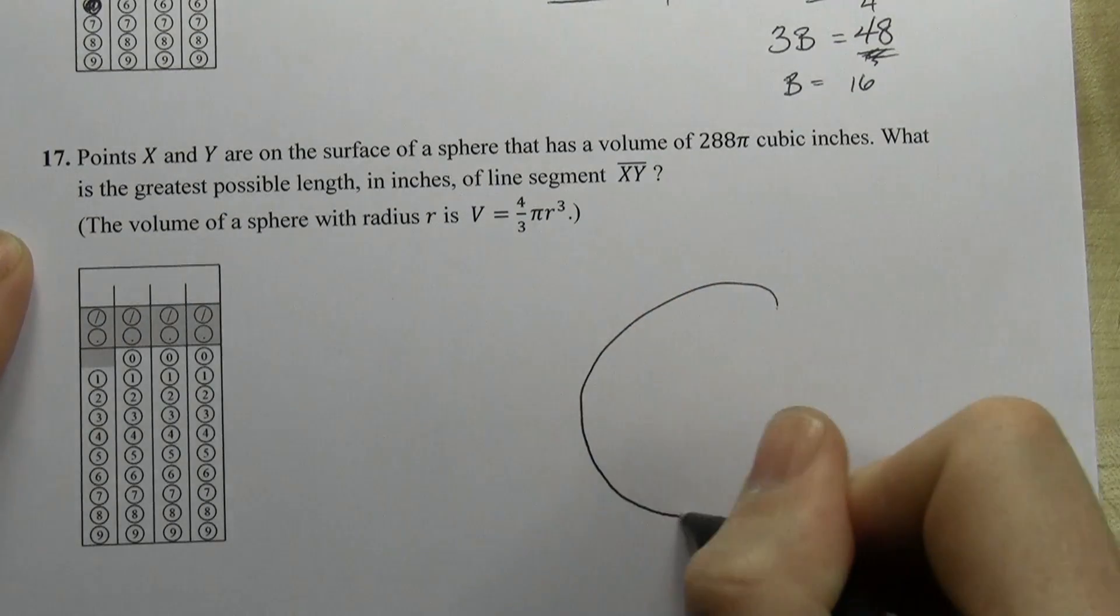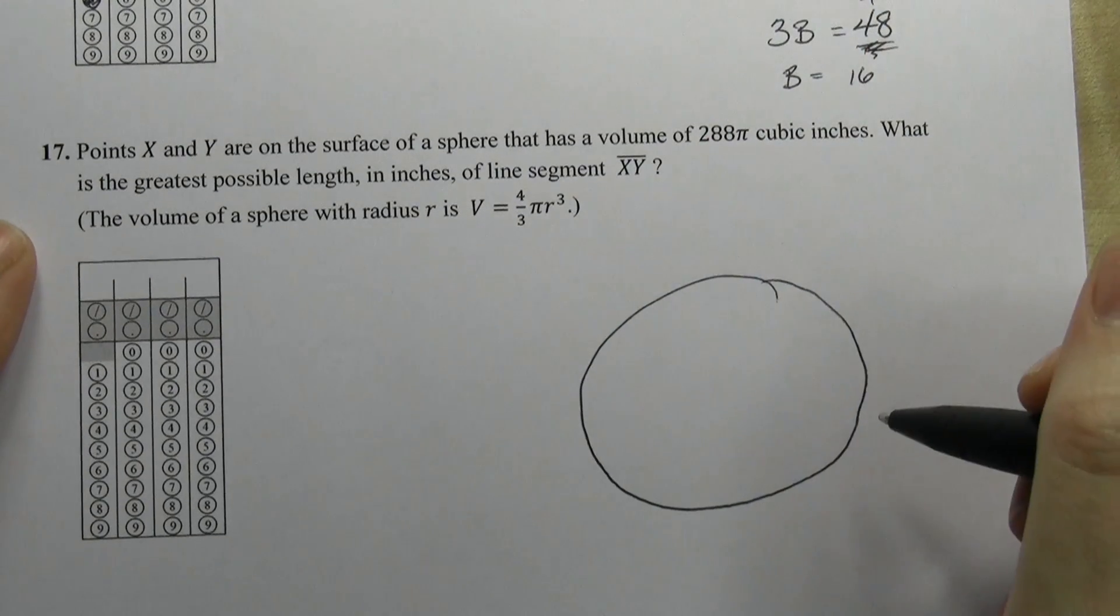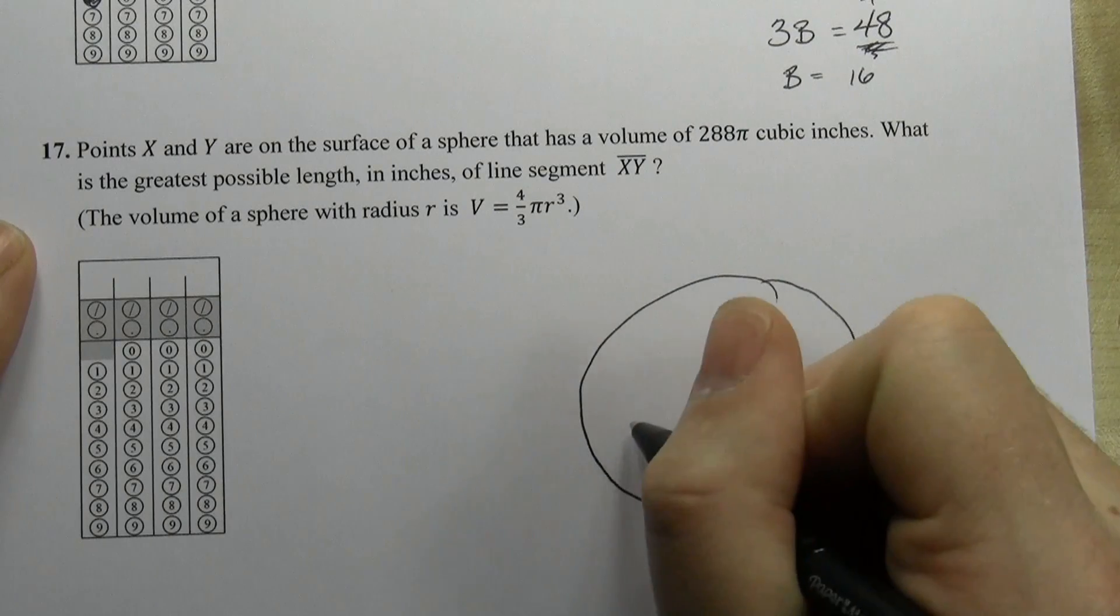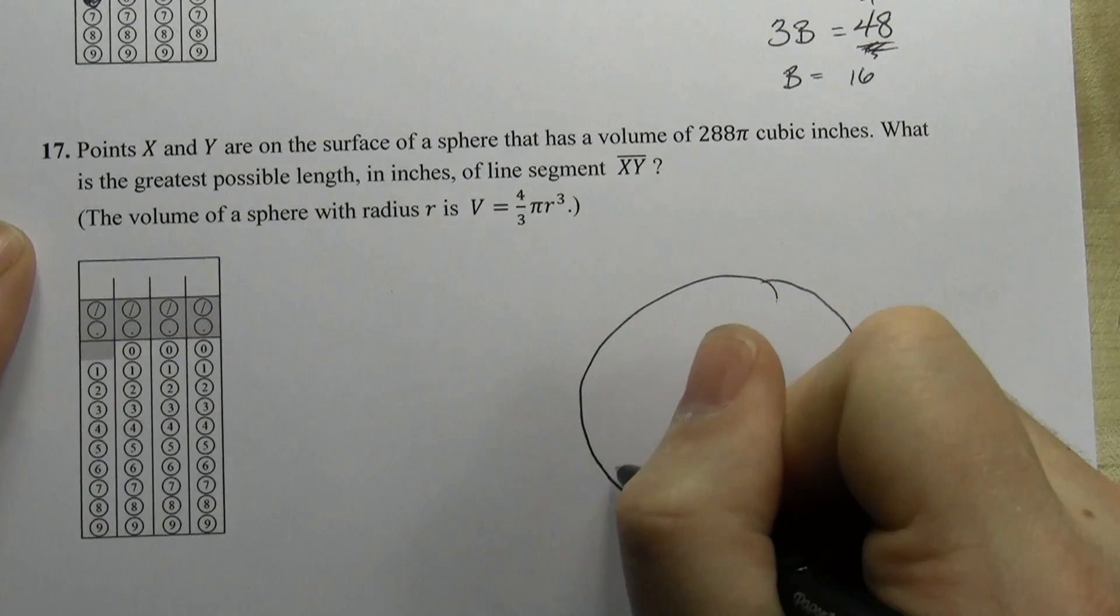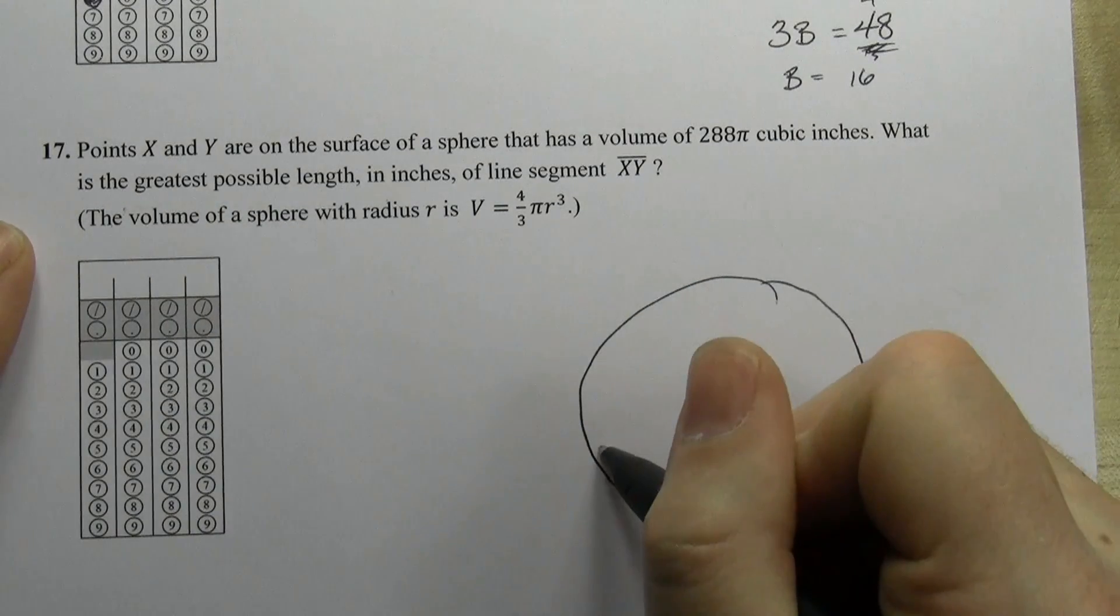Obviously it's a bit tougher to draw a sphere on a flat piece of paper, so let's just draw a circle and remember that it's actually three dimensions. Now if we start drawing potential XYs, and we want to make it as long as possible because it's asking for the greatest possible length, we start to see that...